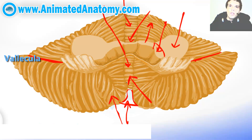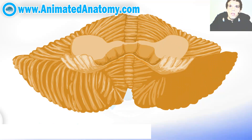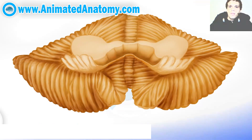If you remember this border over here, this part was called the pyramid of the vermis. The lateral borders are the tonsilla of the cerebellum. With a little bit of Photoshop, this is how it looks. We should now look at the cerebellum from the dorsal and caudal point of view.